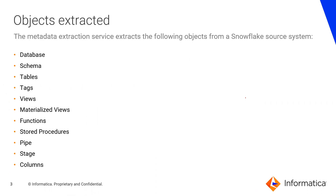Snowflake is an analytic data warehouse provided as software as a service. The Snowflake data warehouse uses a SQL database engine with a unique architecture designed for cloud services. Currently in CDGC, the types of objects extracted from Snowflake include database, schema, tables, tags, views, materialized views, functions, stored procedures, pipe, stage, and columns. I recommend referring to the catalog source configuration guide for Snowflake for up-to-date information. The link to the documentation is provided in the reference section of this slide.